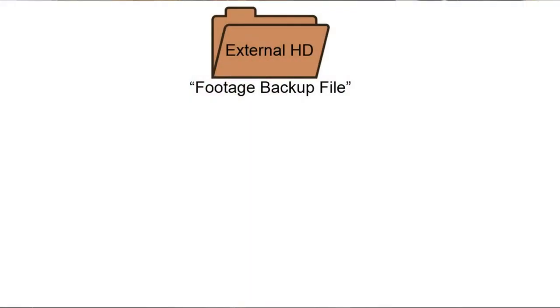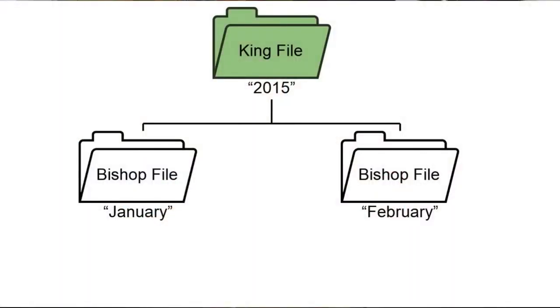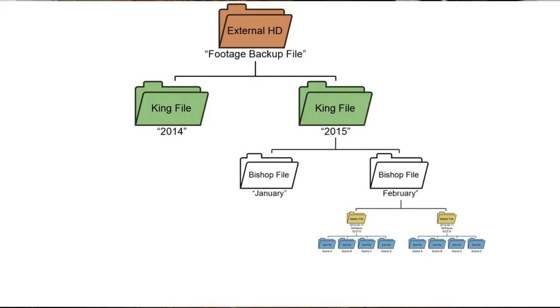Once all the files are labeled and copied onto your computer, you'll want to plug in one of your external hard drives and copy the master files you just created over to your external hard drive. On my external hard drive, I'll have an entire file named footage backup which houses all my footage, keeping all my documents and other files separate. Inside this footage backup file, you want to make sure you have what I call king files for each year. So I'll have a file named 2015, and then inside that I'll have what I call bishop files for each month. Finally, I'll import my master file — already labeled with the date of production — into this bishop file.